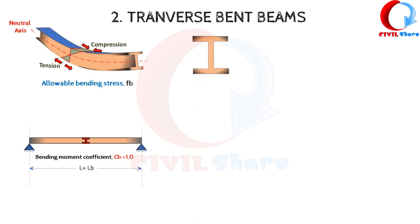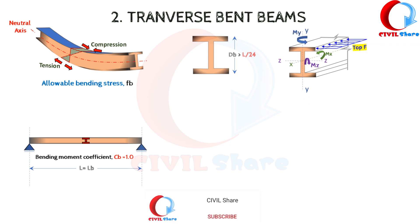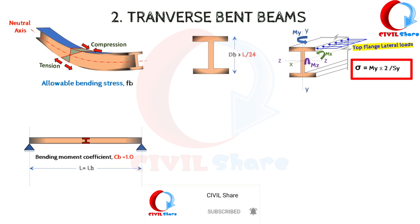Generally, the depth of horizontal members should not be less than 1/24 of the span. If top flange lateral loads are significant, the transverse beam shall be investigated for bending about the Y-Y axis and for torsion. This can be estimated by using the moment MY divided by the section modulus SY.